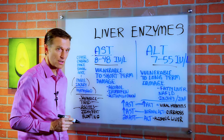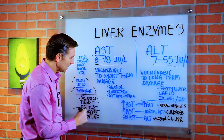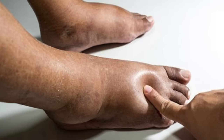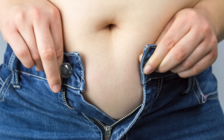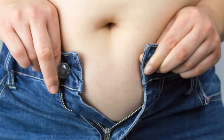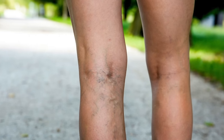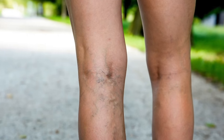Ascites is a real major liver problem. Other symptoms include itchy feet, edema and swelling in the legs, bloating, a lot of digestive issues, spider veins, and many other symptoms.